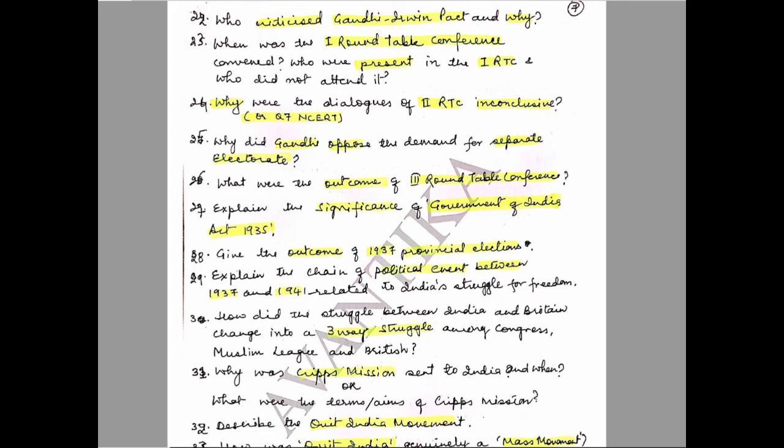Question 26: What were the outcomes of the third Roundtable Conference? Question 27: Explain the significance of the Government of India Act 1935. Question 28: Give the outcome of the 1937 provincial elections. Question 29: Explain the chain of political events between 1937 and 1941 related to India's struggle for freedom. Question 30: How did the struggle between India and Britain change into a three-way struggle among Congress, Muslim League, and the British?